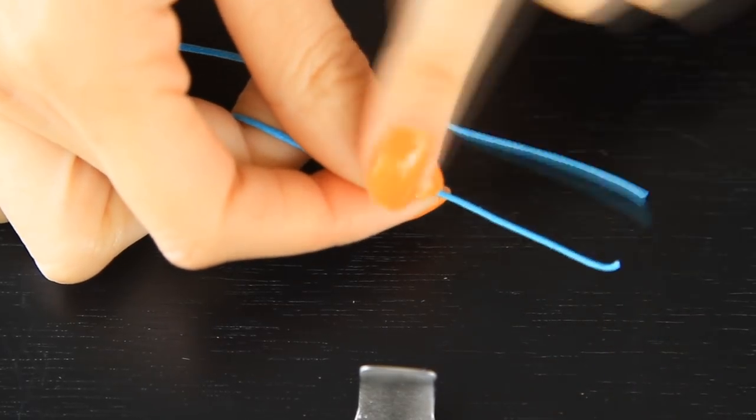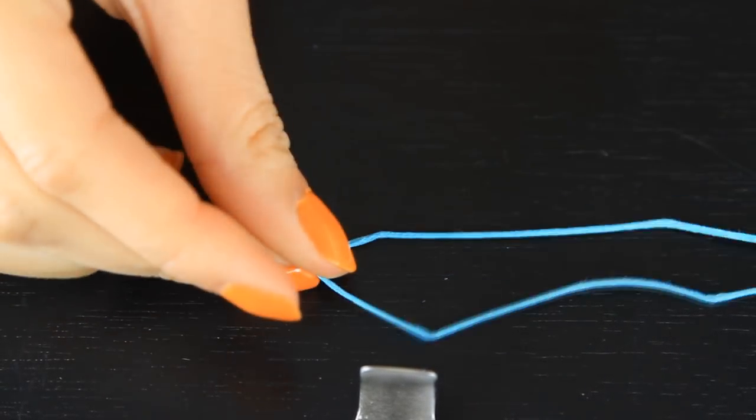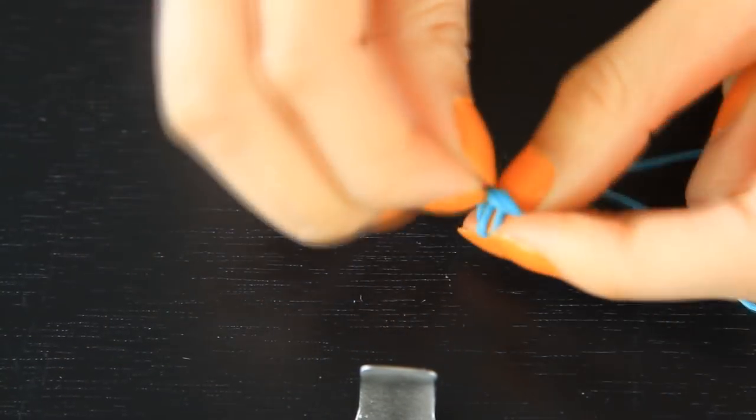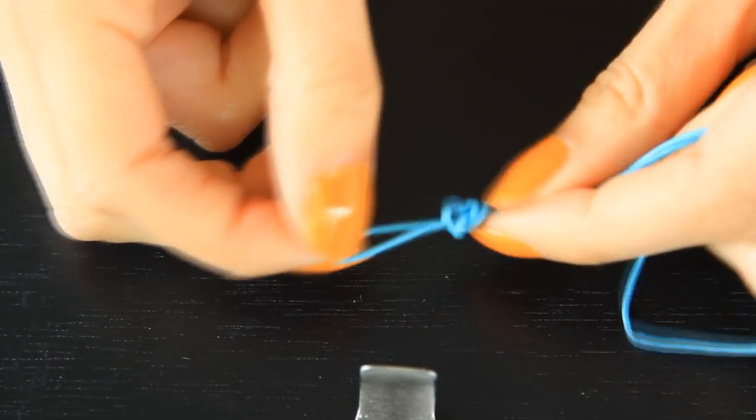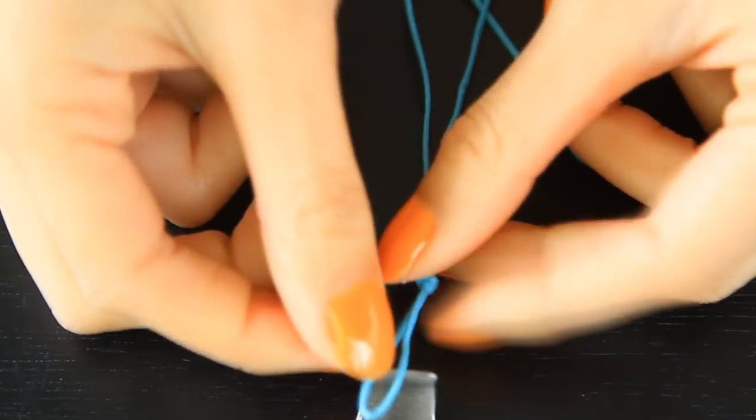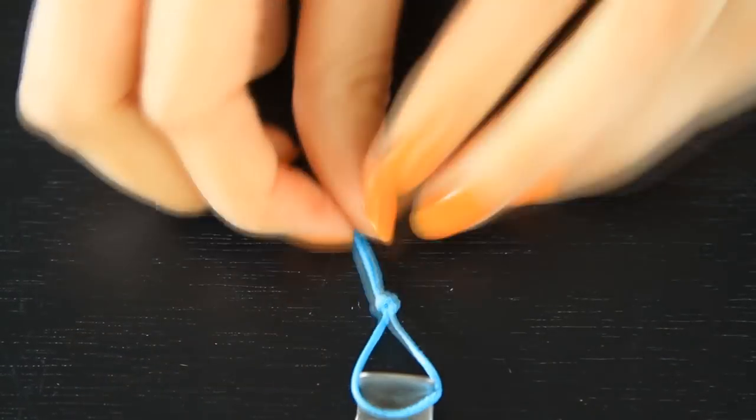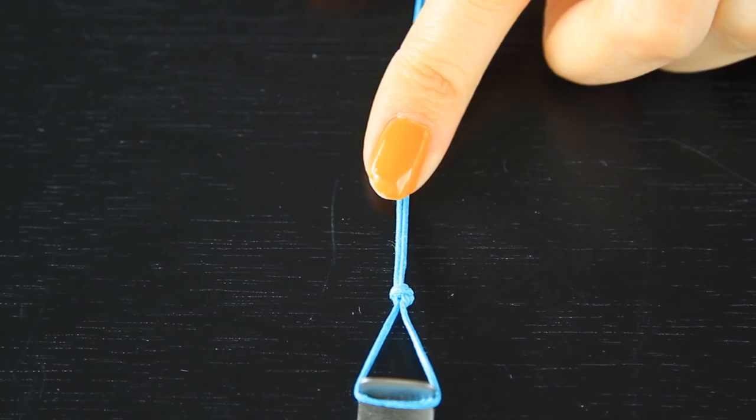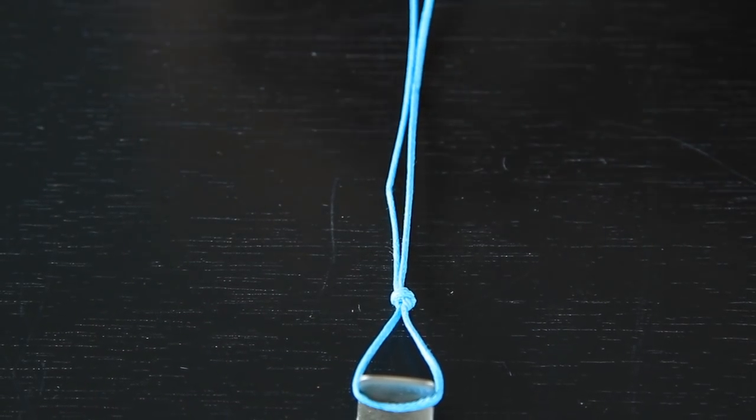So basically what we're going to need, we're going to need to cut out a string that is about 40 inches long. It could be shorter, but to play it safe, I usually like to cut it a lot longer than what I need. So with this 40 inch string, what you're going to do is fold it in half and then you're going to tie a little knot and make a loop. You want your loop to be at least a half an inch opening.